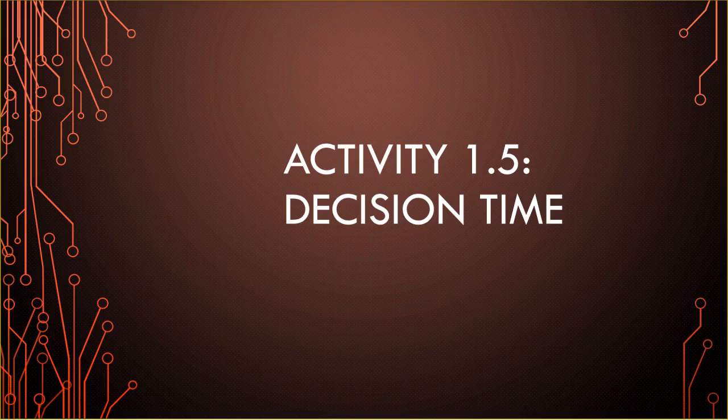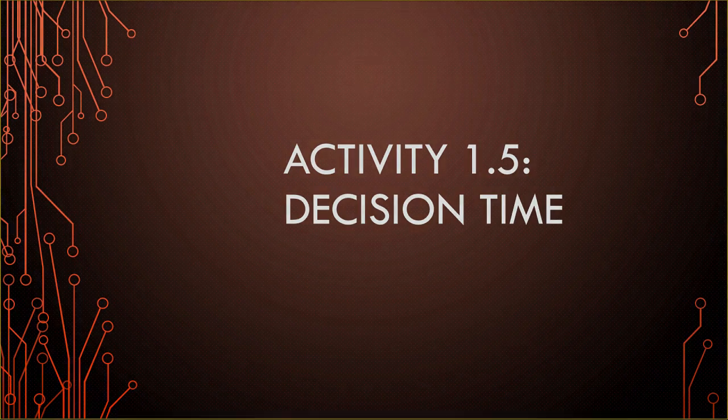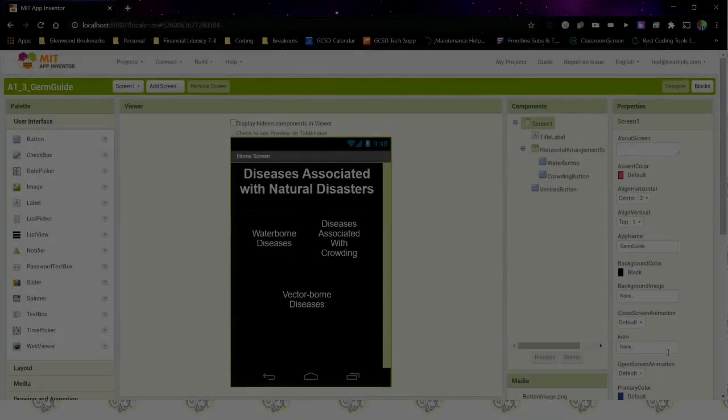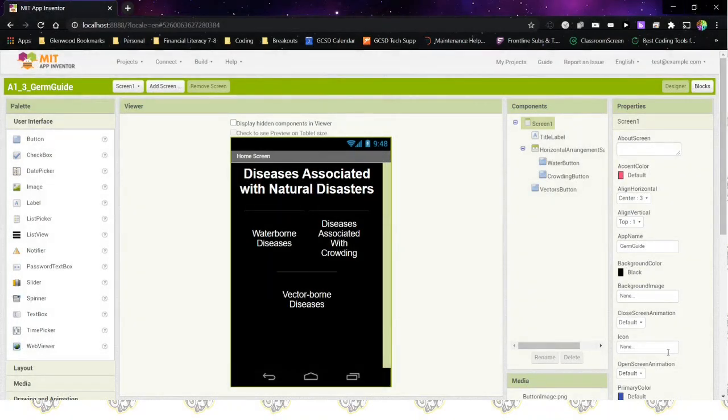This video is for activity 1.5, Decision Time. We aren't going to use a data file for this one. We're going to use the completed GermGuide app that we had from the previous activity.